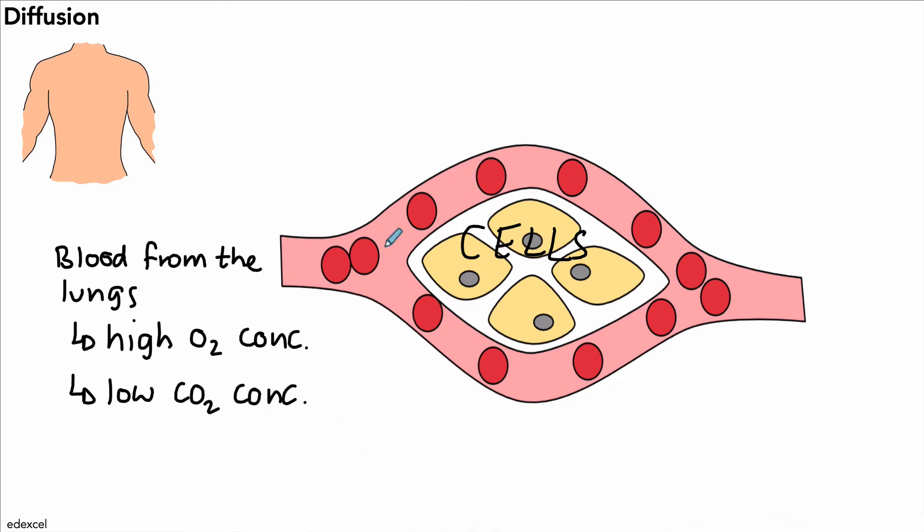In terms of the cells, they carry out respiration, so they're going to have a low oxygen concentration inside them. Therefore, if we've got high concentration of oxygen in the blood and low in the cells, oxygen is going to diffuse into the cells across the membranes.